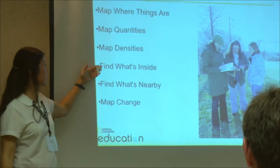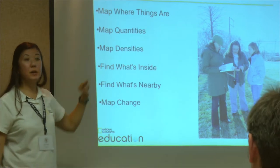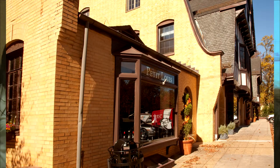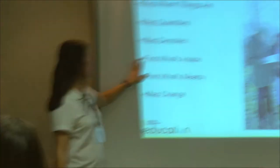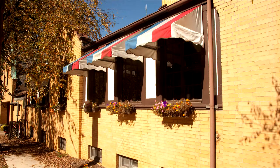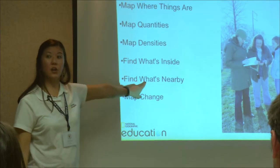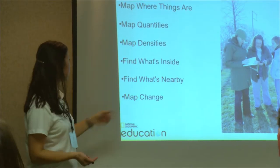You can look at what's inside. An example would be if you're opening up a restaurant in Baltimore — a French restaurant — and the minimum, the lowest meal that you're offering is $50. You might want to say, okay, what other French restaurants are in Baltimore? And then if I want to open it up in Canton, are there other French restaurants nearby?